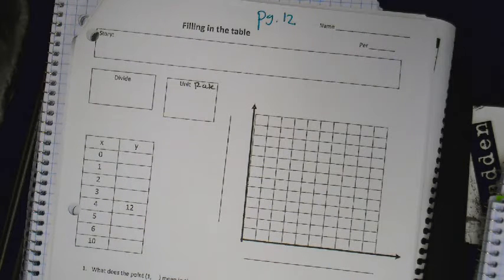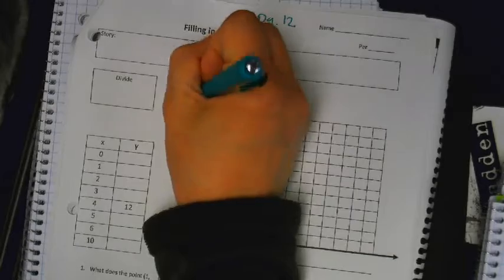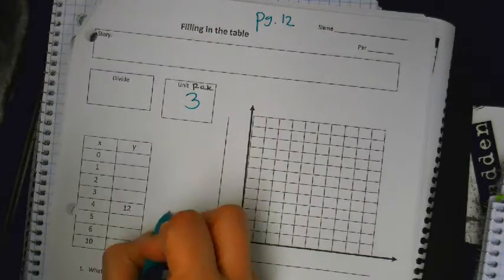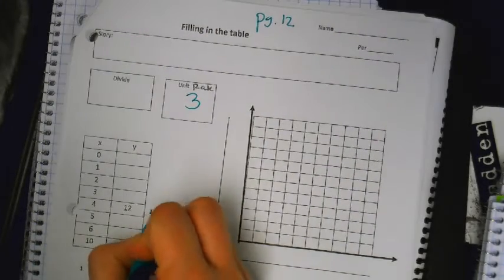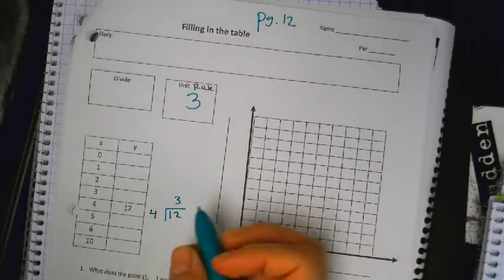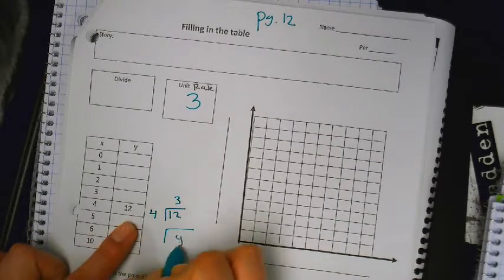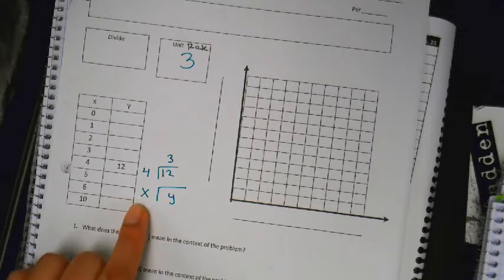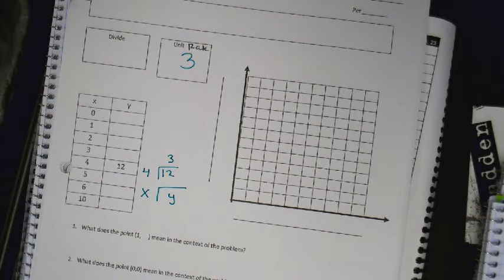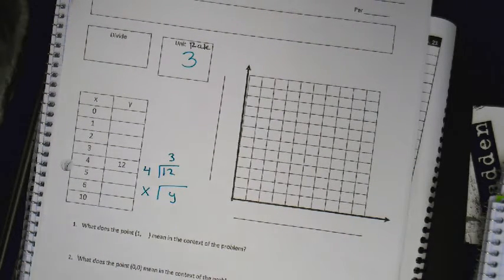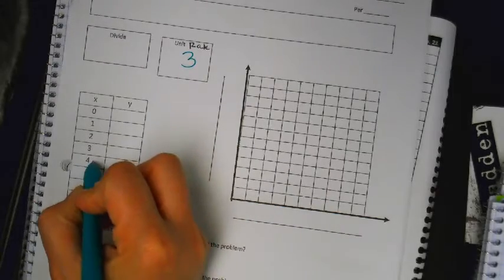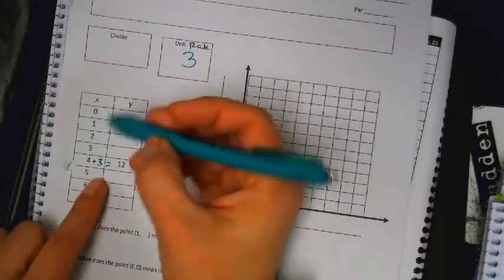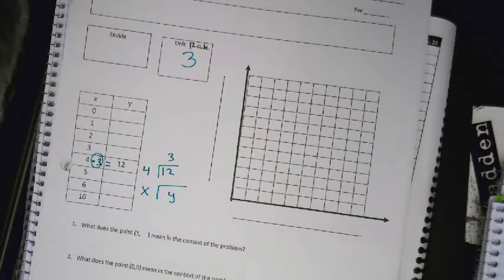What's my unit rate? 3. How do you know? Because 12 divided by 4 is 3. When you divide, you put Y inside and X outside. You can also ask yourself, what did I multiply 4 to get to 12? Times 3. So therefore, my unit rate is 3. What you're multiplying by, that's your unit rate.